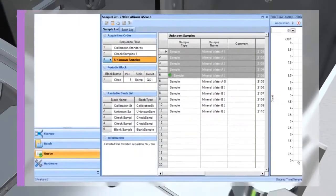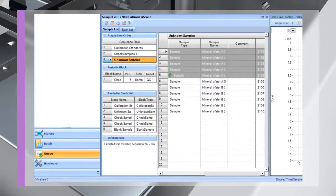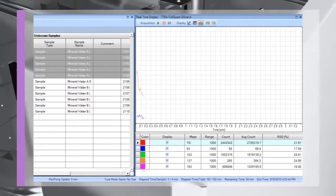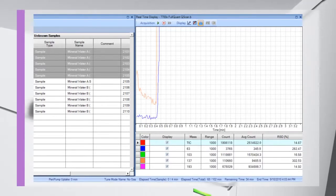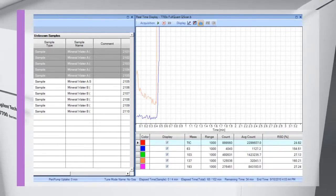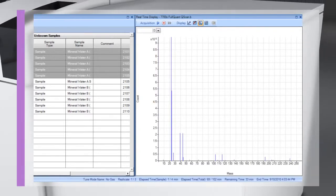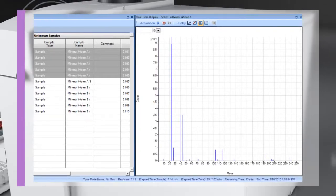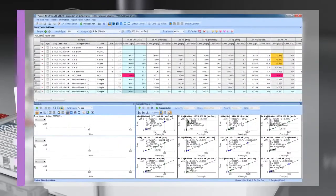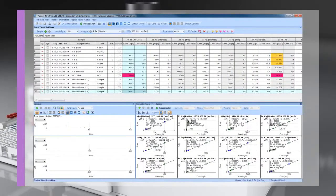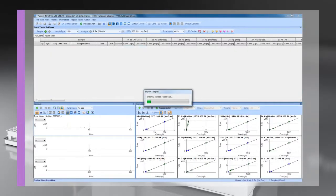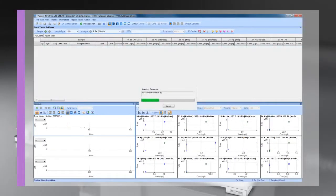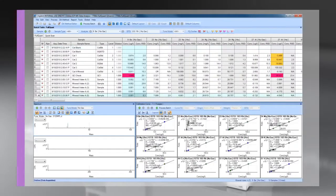Agilent's ICP-MS MassHunter software simplifies routine operation of the 7700 while maintaining the flexibility needed for advanced research. The built-in preset methods, comprehensive auto-tune functions and intuitive graphical interface allow novice users to quickly become productive. Data processing is based around a user-configurable data table that is updated in real-time during sample acquisition. The data table is fully integrated with the calibration pane and the spectrum or chromatogram display.